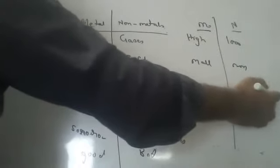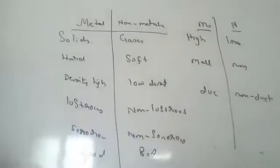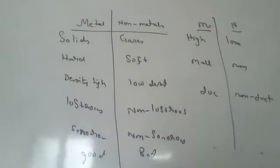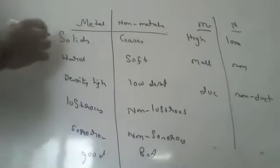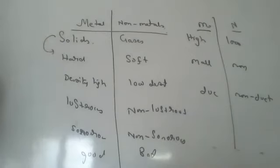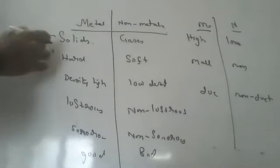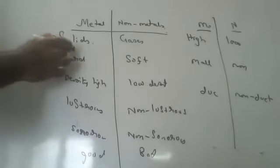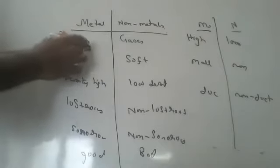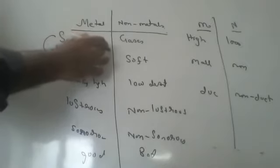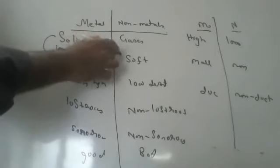Today I want to discuss some exceptions to these differences. Metals are generally solid — except, what is a liquid metal? Mercury. Mercury is a liquid metal. You should remember the symbol for mercury. You might have seen mercury in thermometers.